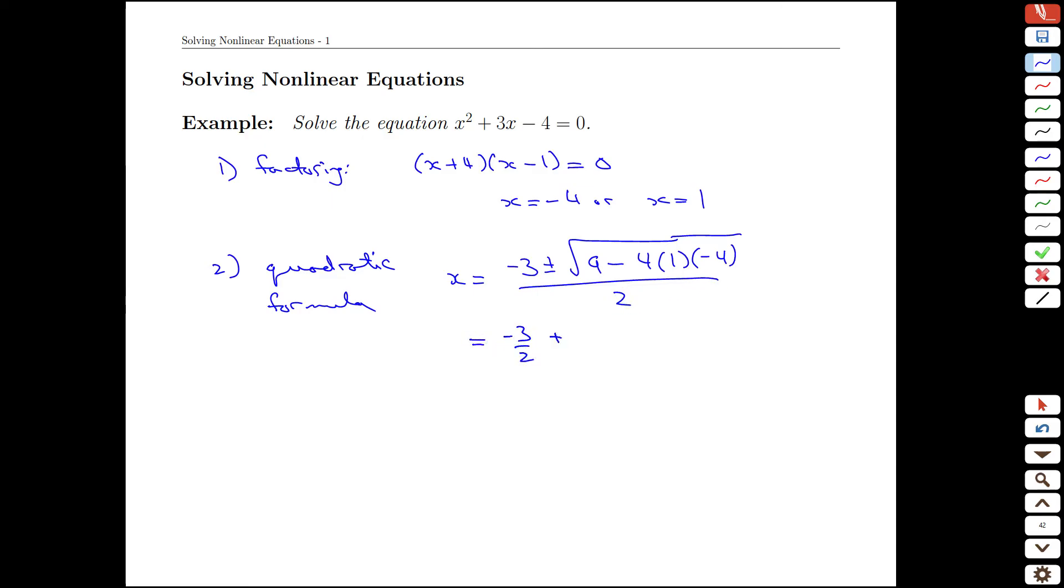When we do that, this ends up being 9 minus, or plus 16 is 25. We're going to have plus or minus 5 halves. And if we're careful about that, we'll have minus 8 halves and plus 2 halves, or minus 4 and 1. So, two different ways to solve that equation.